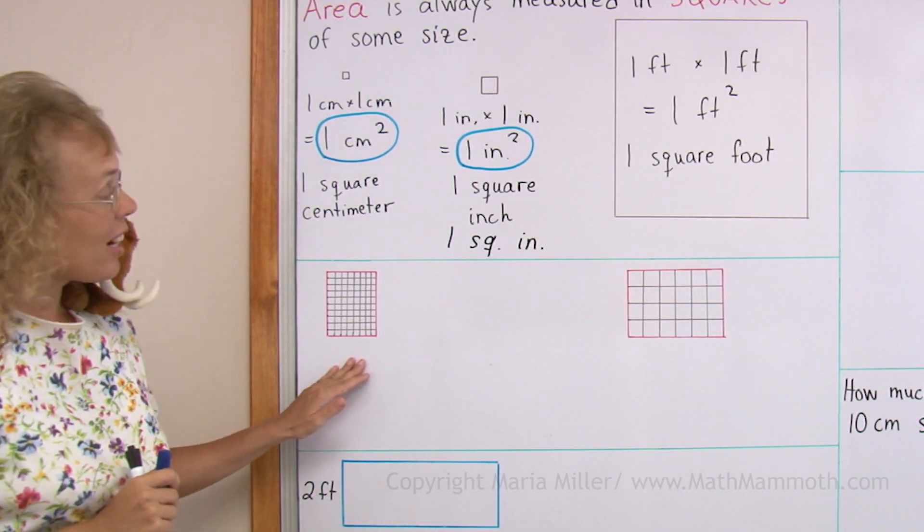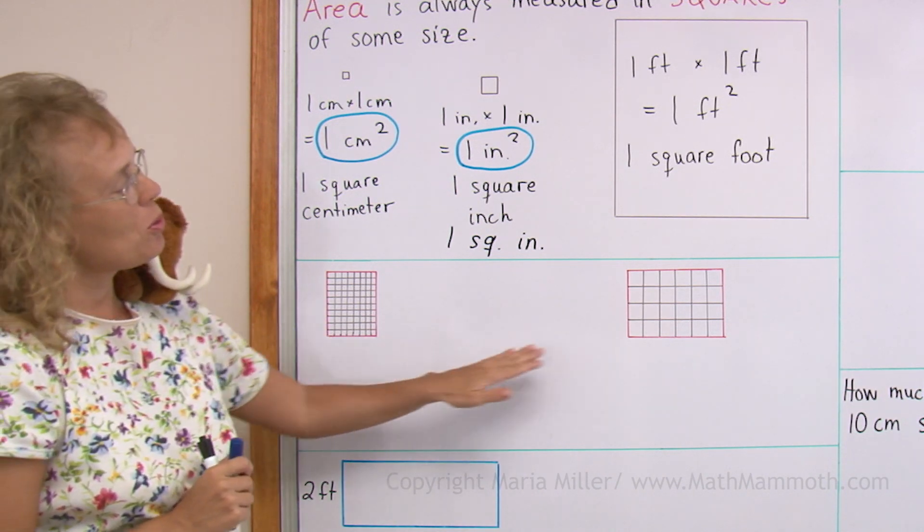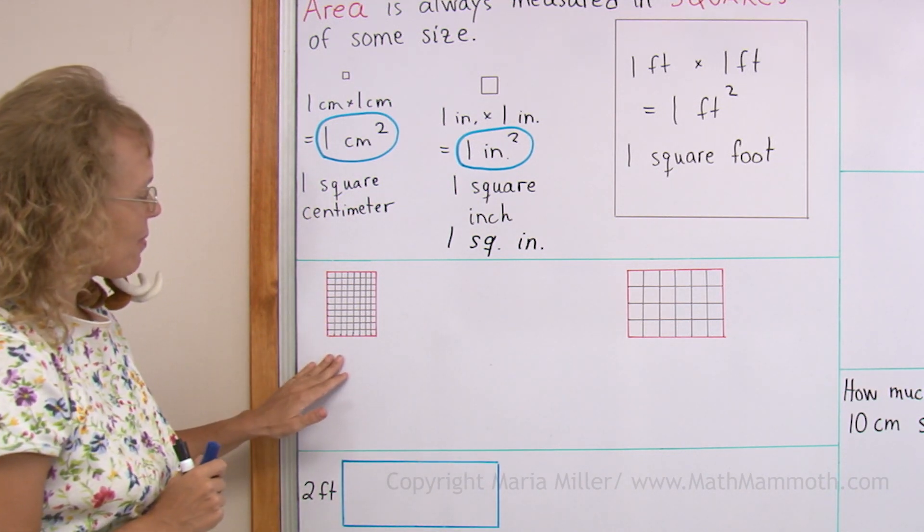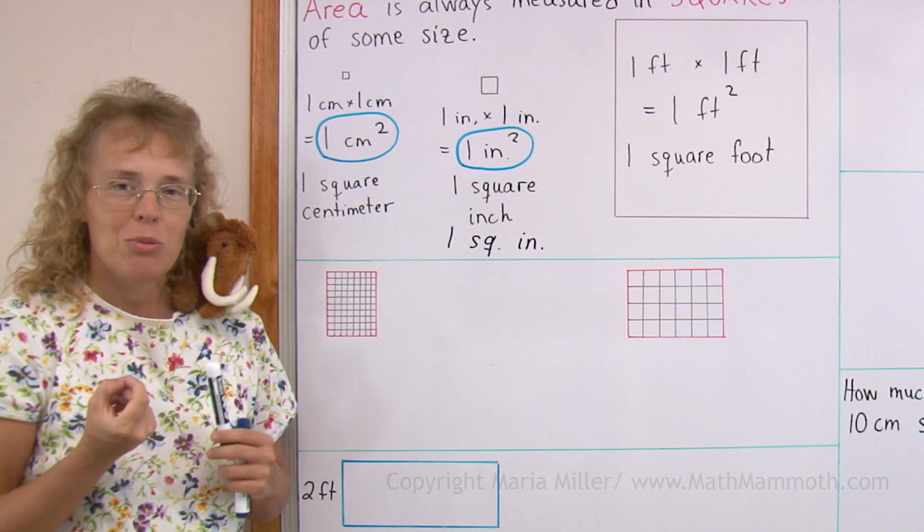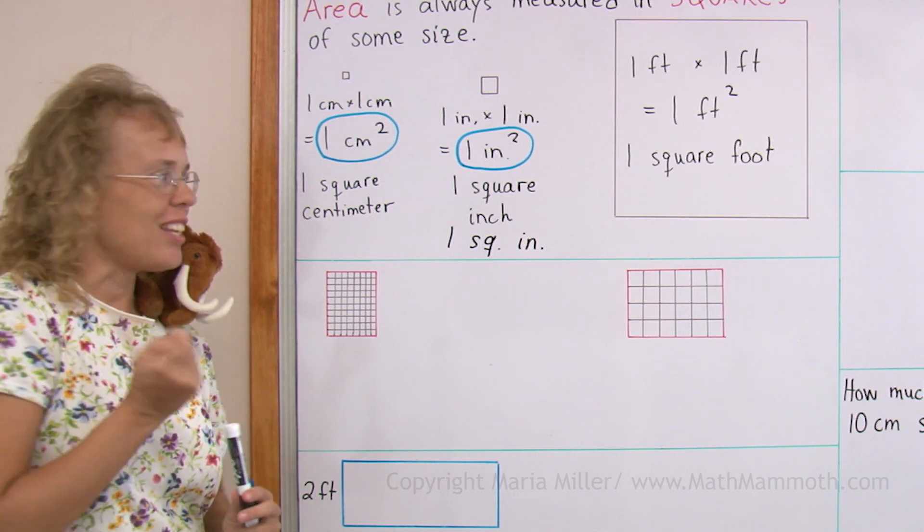Now we're going to find the area of these two rectangles here. This one has those little tiny square centimeters. I drew them all in, but of course we will use multiplication to find the area, right?